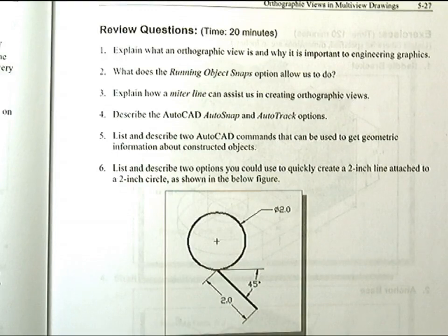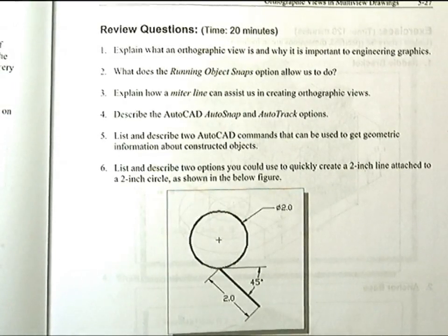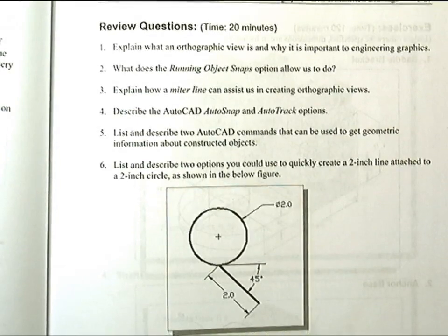Number five: List and describe two AutoCAD commands that can be used to get geometric information about constructed objects. One of those is the list command, L-I-S-T. It can be used to show detailed information about geometric objects. AutoCAD also provides tools that allow us to display and change properties of the constructed geometric objects. The properties command not only provides the detailed information about the geometric objects, modifications can also be done very quickly.